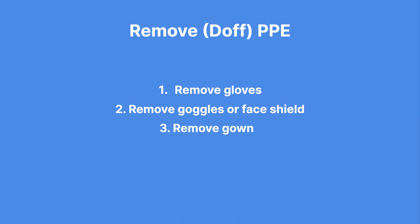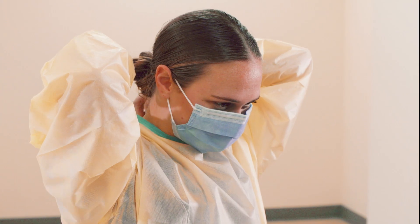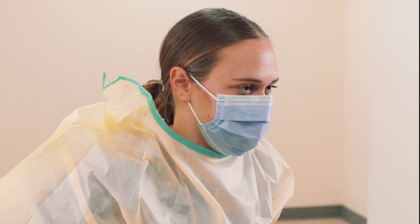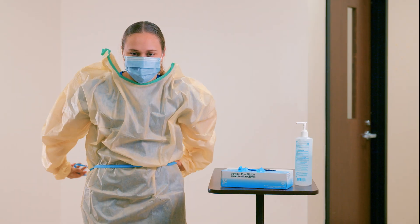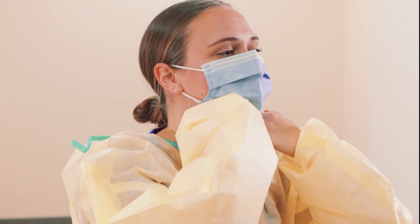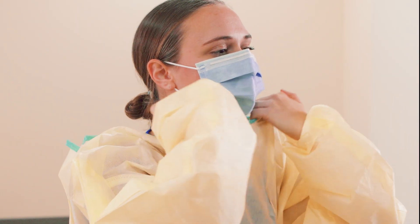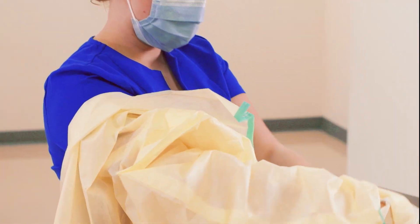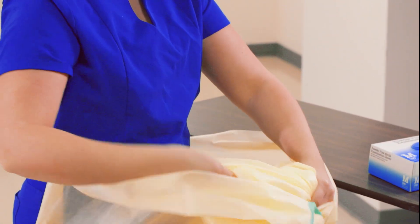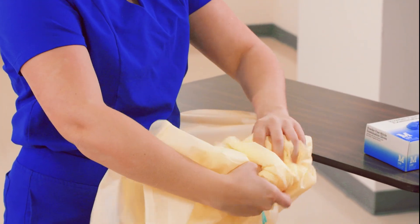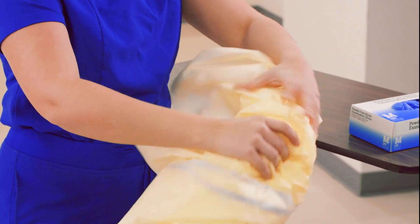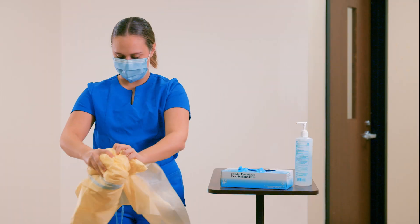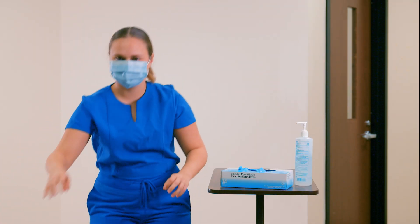Step 3: Remove gown. The outside of the gown is considered to be contaminated. Untie the gown, then, touching only the inside, turn it inside out and fold it into a bundle. The inside of the gown is considered to be the least contaminated part, and by only touching the inside, you reduce the chance of transferring infectious agents to yourself or others. Then dispose of the gown in a designated container.